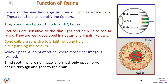The retina accepts the image and converts it into neural signals, which are then passed to the brain through the nerve cells. The retina has a yellow spot, which is the point where the clearest image is formed. It also has a place called the blind spot where no image is formed, and that is the place from where the optic nerve passes and goes to the brain.